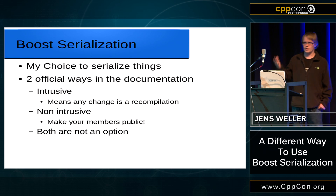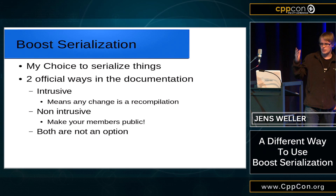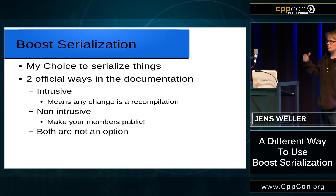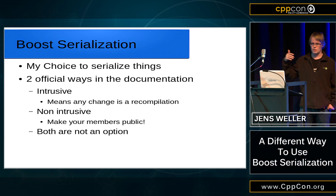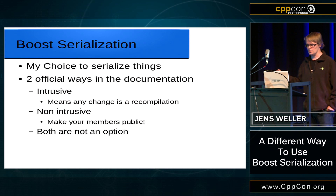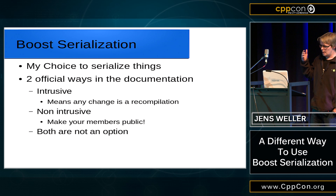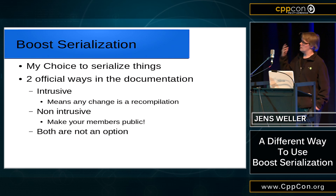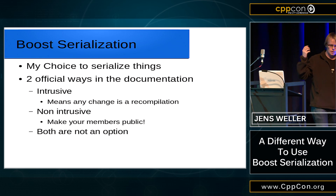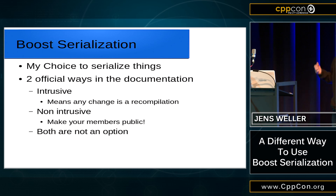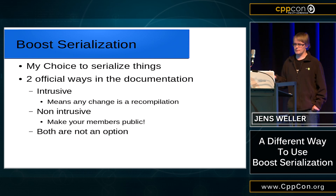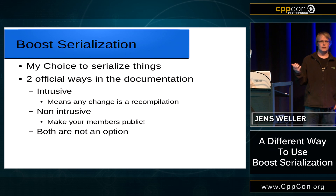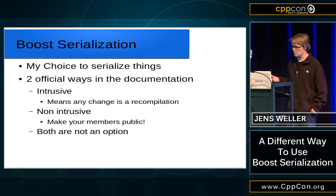With the intrusive way I have to put that in the header, and it means each time I want to add or change something in the serialization code of my class, I basically get a full recompile as the price for it. The non-intrusive way also has a serialization template function, but then you just have to make your members public — and that's not an option for me.